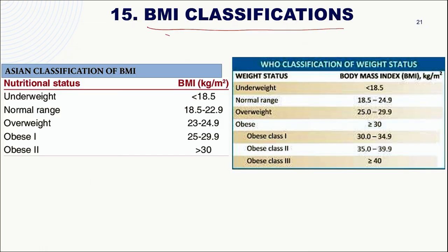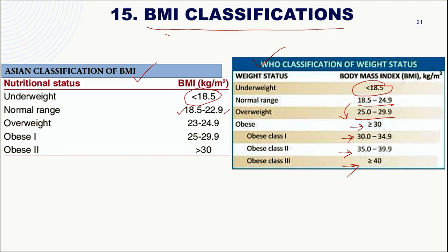BMI is calculated as weight (kg) divided by height (m) squared. WHO classification: under 18.5 is underweight; 18.5–24.99 is normal; 25–29.99 is overweight; followed by obesity grades 1, 2, and 3 in intervals of 5. For Asians, the cutoffs are lower: normal is 18.5–22.9; above 23 to 25 is overweight; 25–29.9 is obesity grade 1; and above 30 is obesity grade 2.